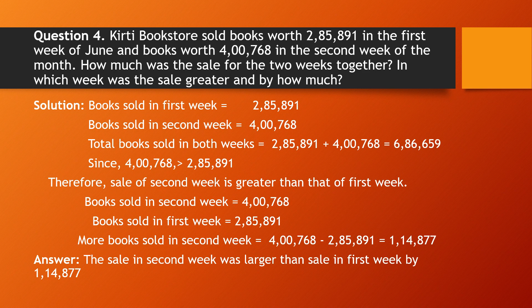Question number four: Kirti Bookstore sold books worth ₹2,85,891 in the first week of June and books worth ₹4,768 in the second week. How much was the total sale for the two weeks together, and in which week was the sale greater, and by how much? First, find the total sale of both weeks; second, find which week had greater sales and by how much.